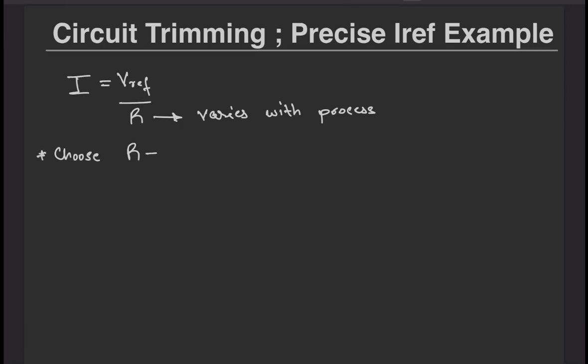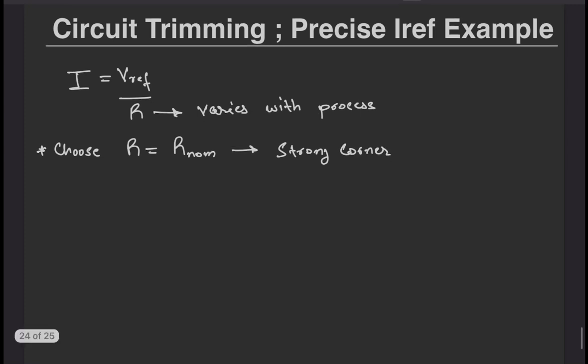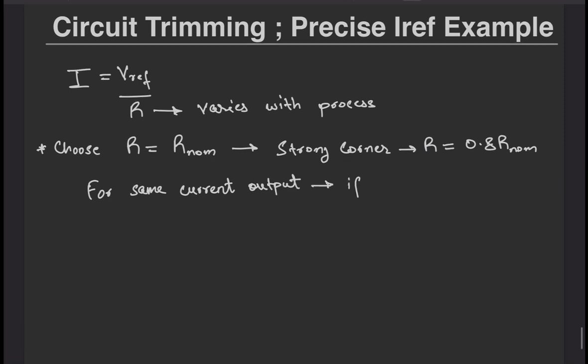We can ameliorate this issue if we get to know which corner the chip would be in so that we can choose the resistor value accordingly. Meaning that if we know that the chip would be in a strong corner where the actual resistance value is 0.8 times the desired value, then we can design it to be 1 by 0.8 times so that after the process variation we get the right R value and consequently the correct desired current.